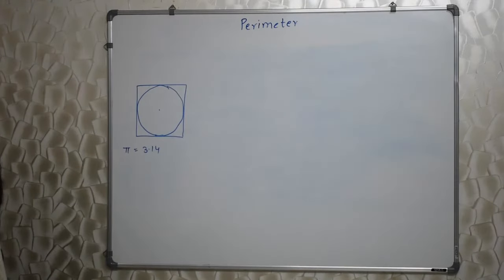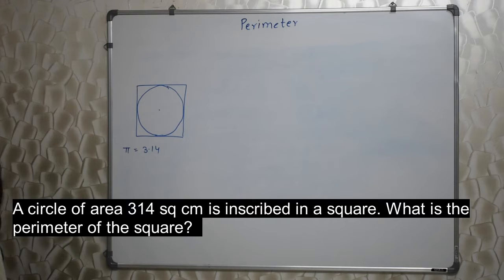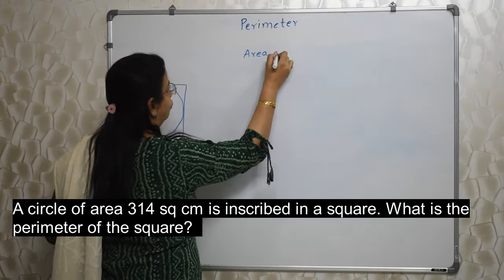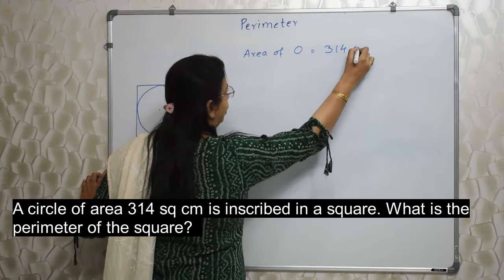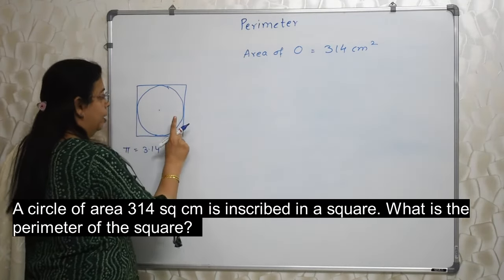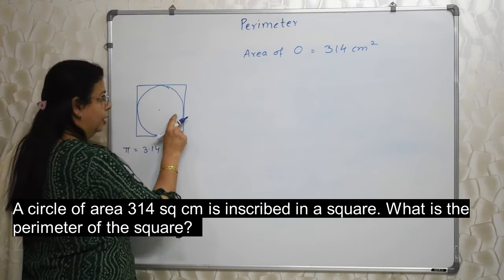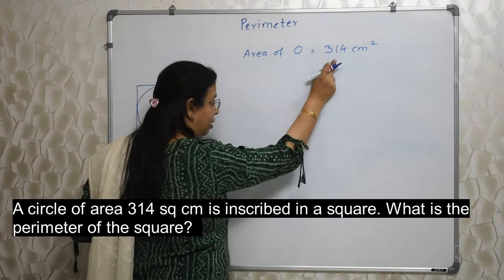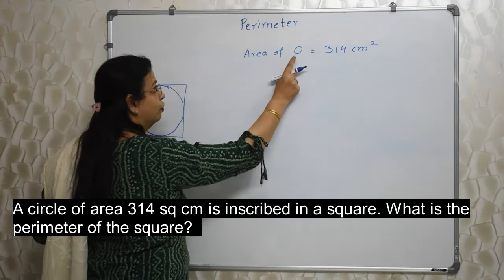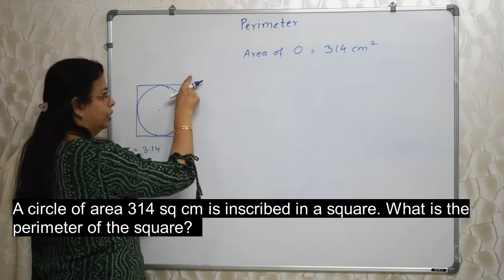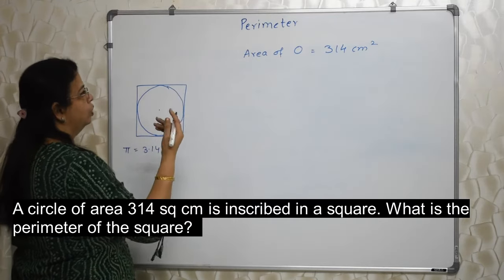Next sum: a circle of area 314 centimeters square is inscribed in a square. What is the perimeter of this square? They have given the area of the circle, which is equal to 314 centimeters square. When a circle is inscribed in a square, the diameter of the circle is the same as the side of the square. So we will use this area and the formula of area to find out the radius of the circle. Once we know the radius, we will know the diameter, and once we know the diameter, we will know the side of the square.